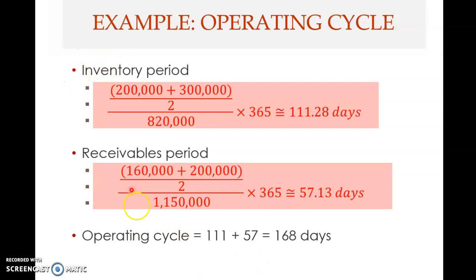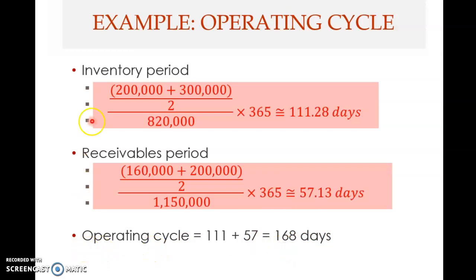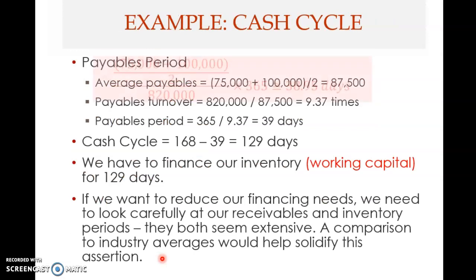The operating cycle is the time from when you purchase inventory until you collect from your customer. It is the sum of the inventory period and the receivable period. Rounding to the nearest day: 111 plus 57 gives 168 days. This means the firm takes 168 days from purchasing inventory to collecting payment from the customer. The longer the operating cycle, the greater the financing need of the firm.